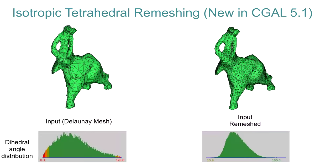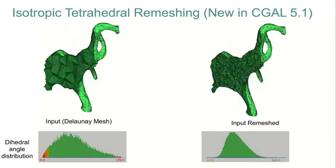Taking the example of an input tetrahedral mesh of an elephant model: after applying two iterations of the algorithm, the distribution of dihedral angles is now centered around the regular dihedral angle, the minimal angle increases while the maximum angle decreases, and since it is an isotropic remesher, the size of the elements becomes uniform.